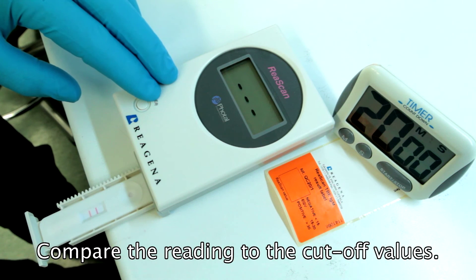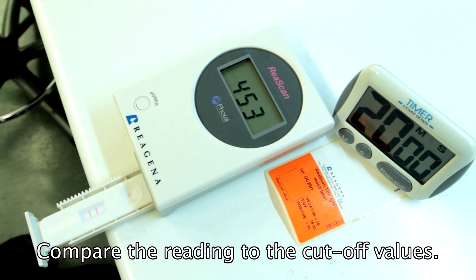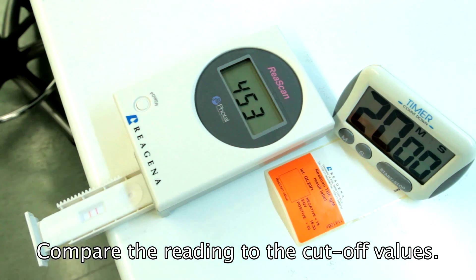Interpret the result as positive, equivalent, or negative according to the lot-specific cut-off values shown on the label on the inside of the kit's box lid.